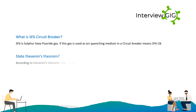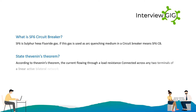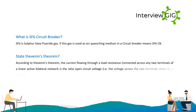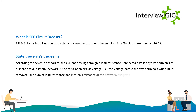State Thevenin's theorem. According to Thevenin's theorem, the current flowing through a load resistance connected across any two terminals of a linear active bilateral network is the ratio of the open circuit voltage (the voltage across the two terminals when RL is removed) to the sum of the load resistance and internal resistance of the network. It is given by Voc / (Ri + RL).